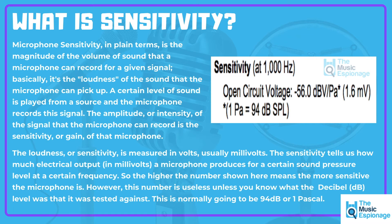That's the microphone being played 1000 hertz — how sensitive was it? The sensitivity tells us how much electrical output in millivolts a microphone produces for a certain sound pressure level at a certain frequency. In this case, or most cases, it's typically at 1000 hertz.